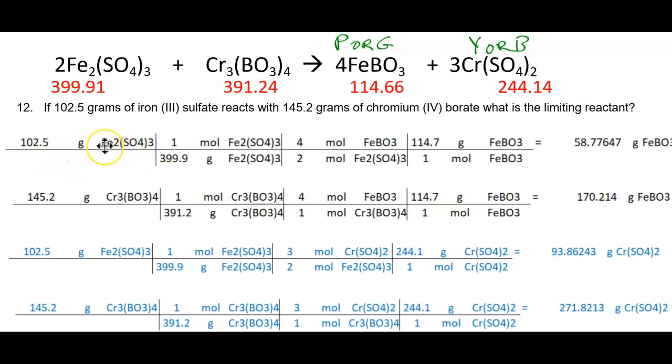I would either take 102.5 grams of iron sulfate and 145 grams of chromium borate and take it to this product, iron borate, or I would take my same two starts and take it to chromium sulfate, the other product. So you wouldn't do both. You do one or the other. But to model that it doesn't matter which one, I've done all of these for you.